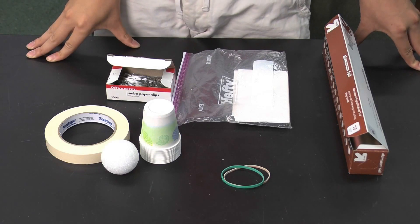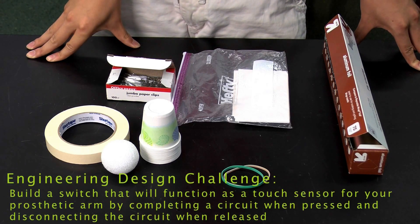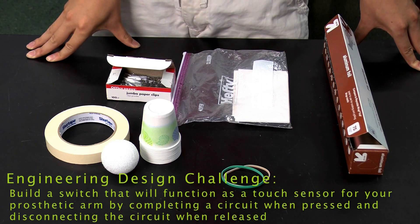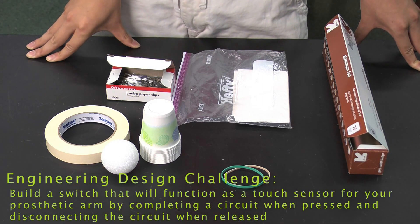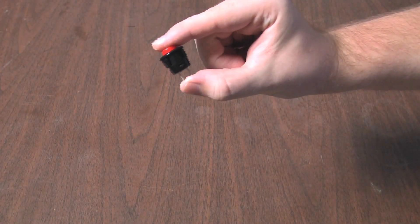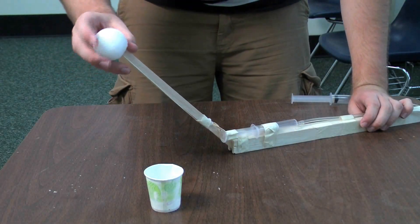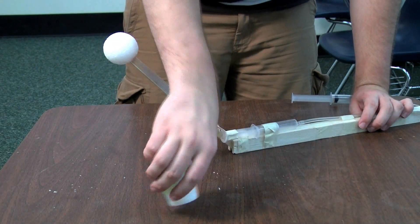This activity provides a creative engineering design challenge for the class to solve. The challenge is to design a touch sensor within specific design requirements. The challenge and requirements are provided in the youth handout. Your students will design a touch sensor that acts like a push button switch in their circuit. It must mount on the end of a cup and will fit on the end of their arm.